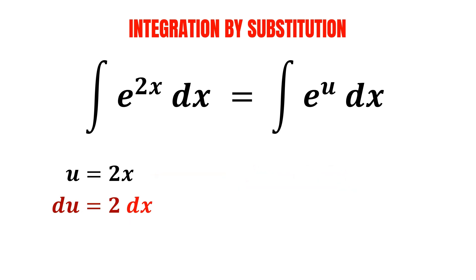Since we want to express dx in terms of du, we divide both sides by 2 and cancel them out on the right-hand side, so that we're only left with dx on one side. The expression du divided by 2 can also be written as 1 over 2 multiplied by du.